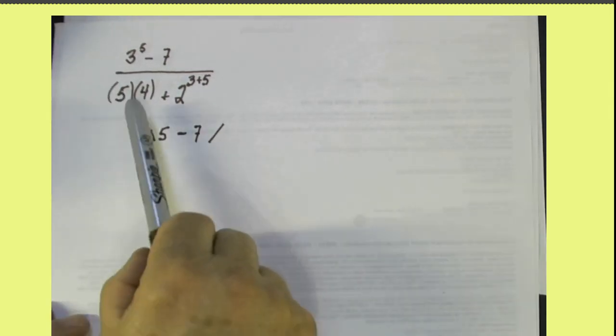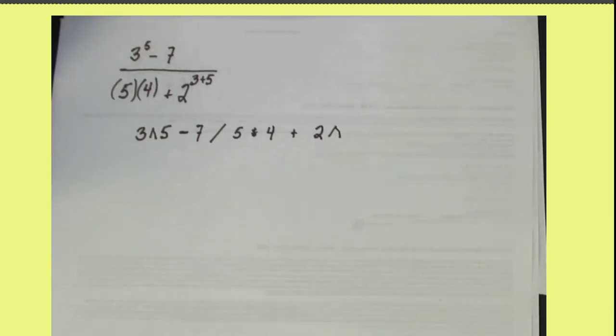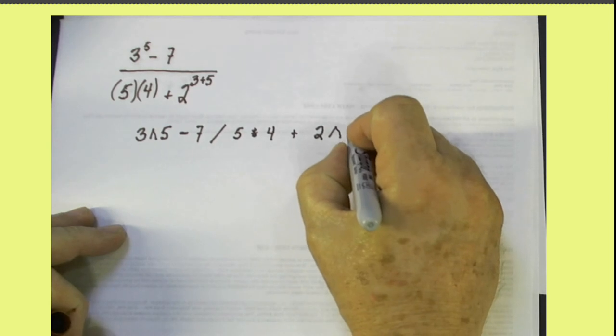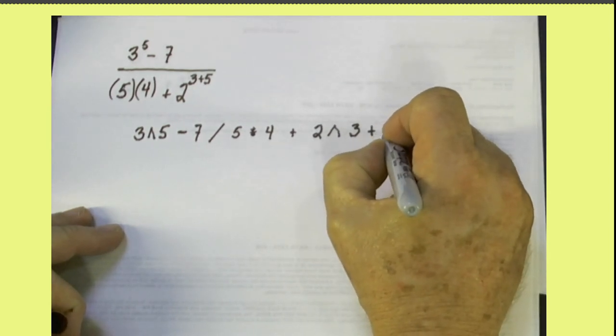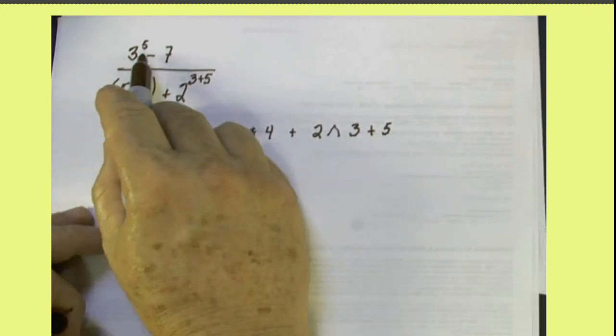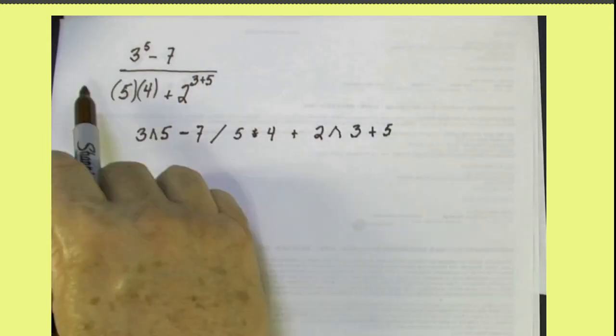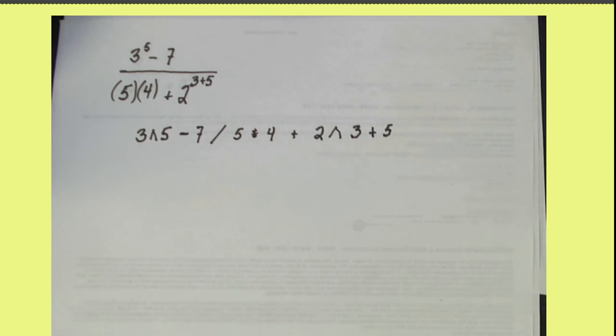There's a binary operation of exponentiation here, there's a binary operation of subtraction, there's a binary operation of division, a binary operation of multiplication, a binary operation of exponentiation, and a binary operation of addition. So literally, what I've done here is just read along from left to right as I went through, writing down the binary operations that are taking place.